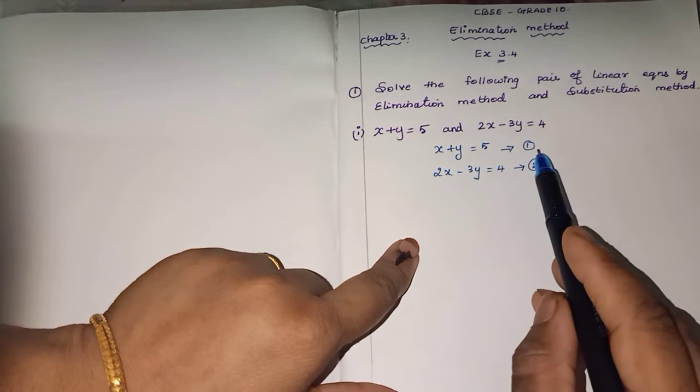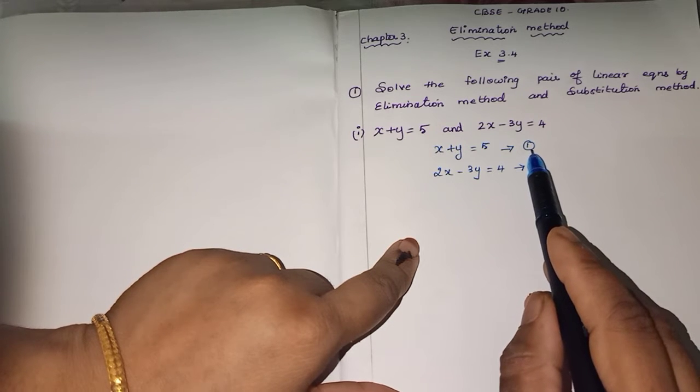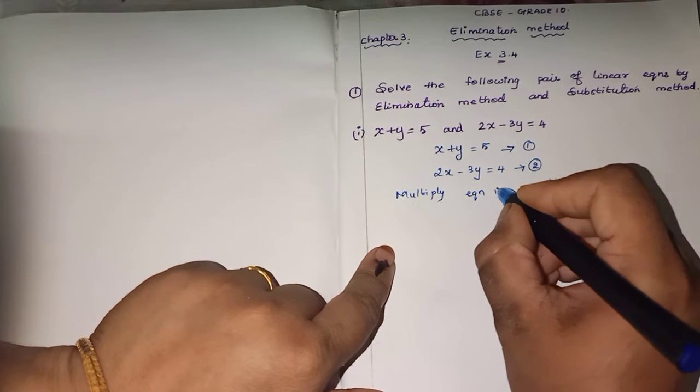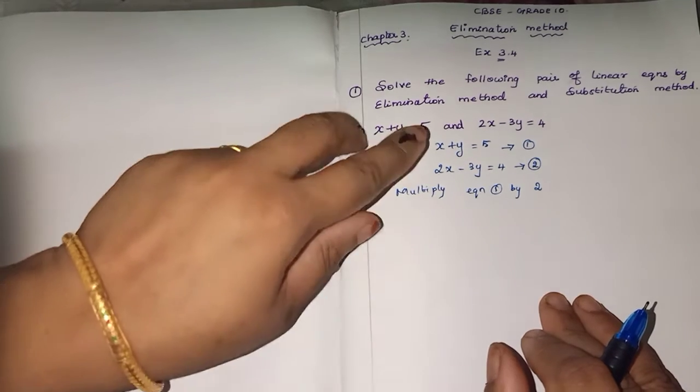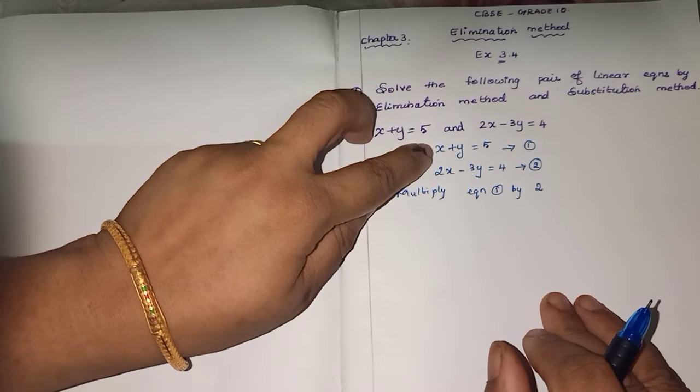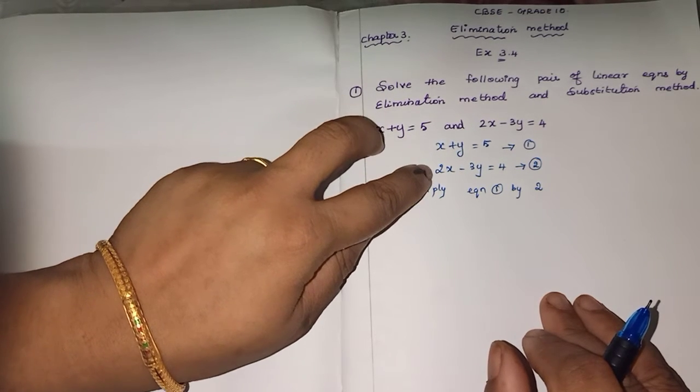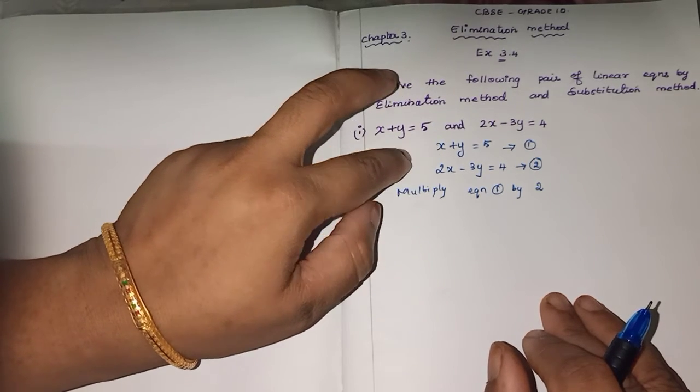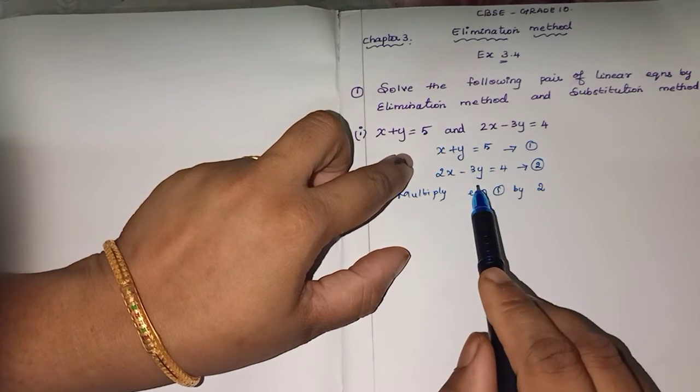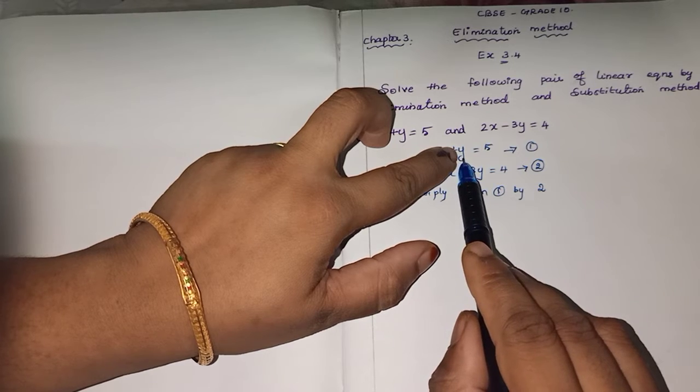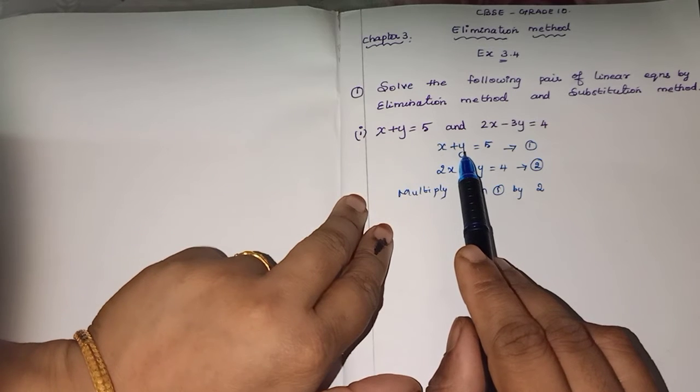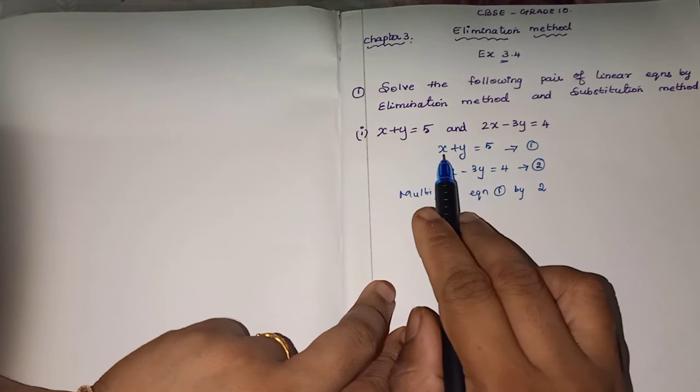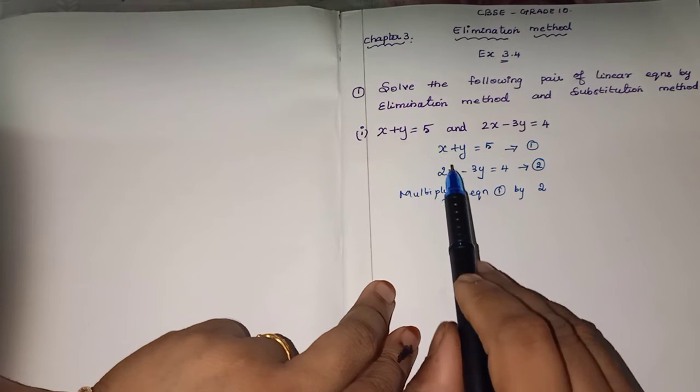Now I am going to multiply this first equation by 2. In the first equation, x coefficient is 1. So multiply by 2. The coefficient will become 2, same as the second equation. So easily when you subtract it, you can get cancelled. So that's why I'm multiplying by 2 to eliminate x. We are going to eliminate the whole equation.